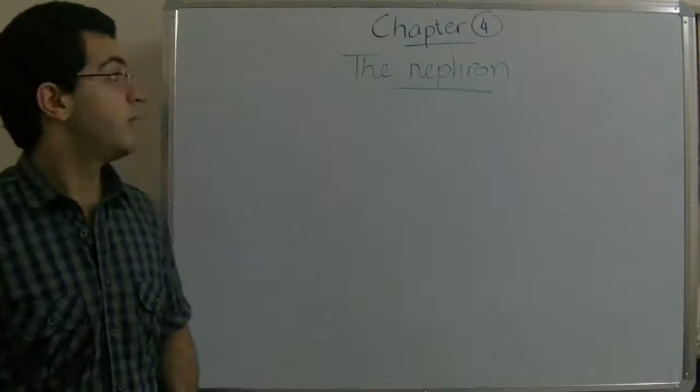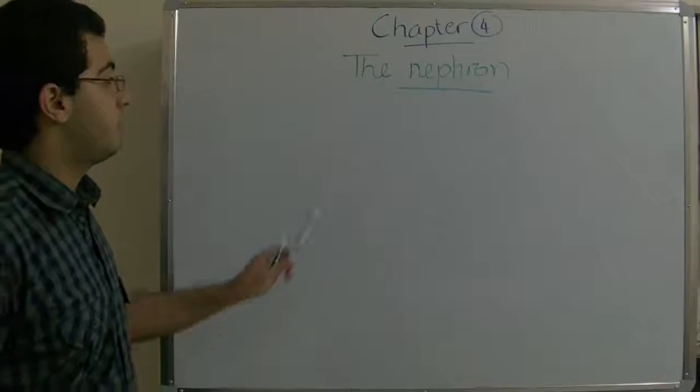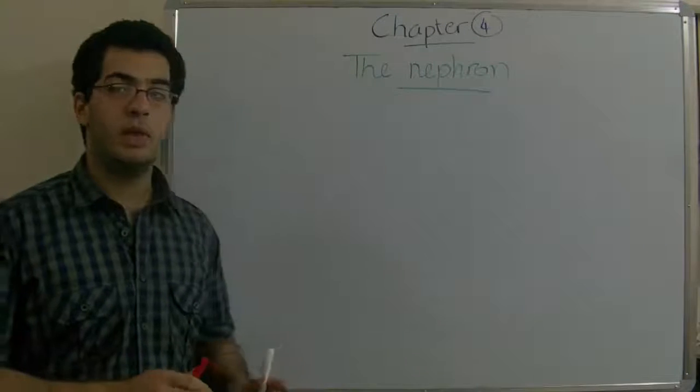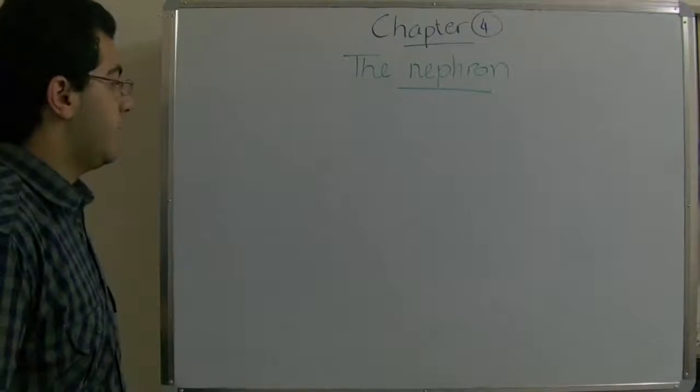Hello everybody and welcome back. Today I'm going to talk about the structure of the nephron. In each kidney inside the human body, there are about one million nephrons in each kidney.